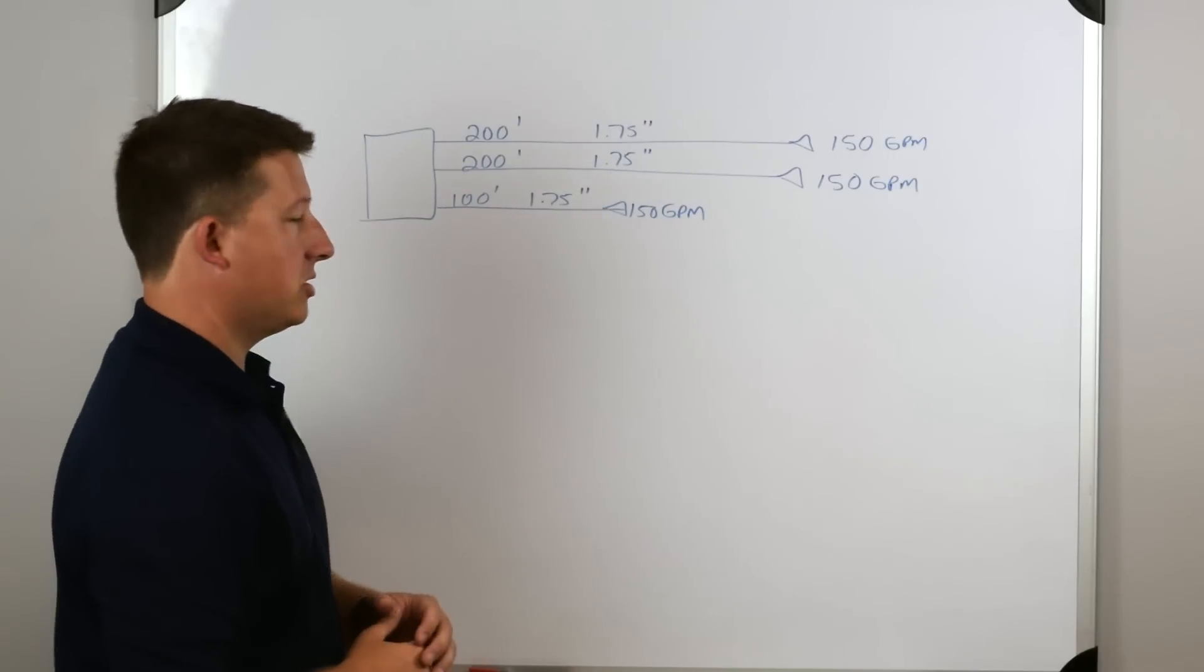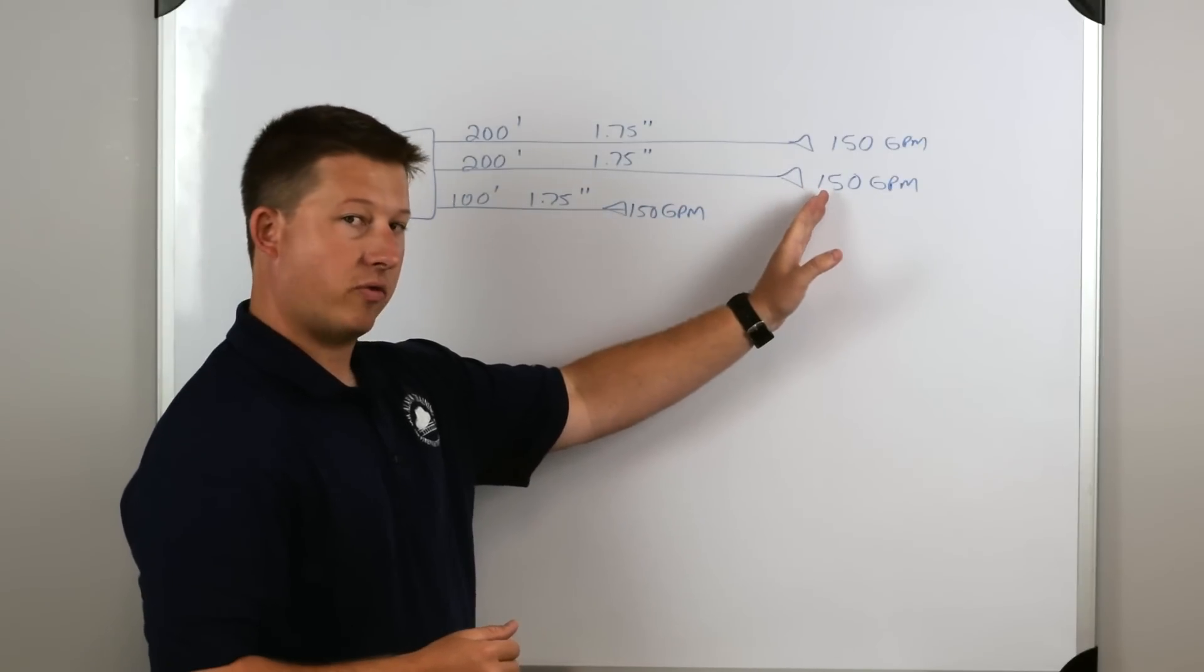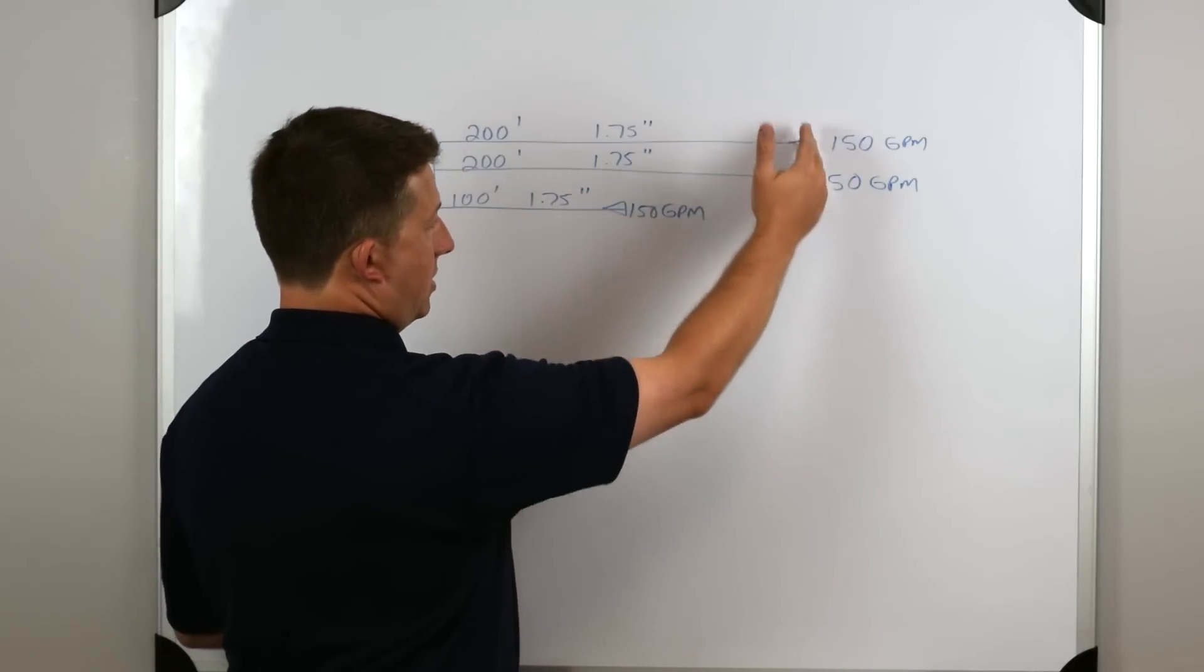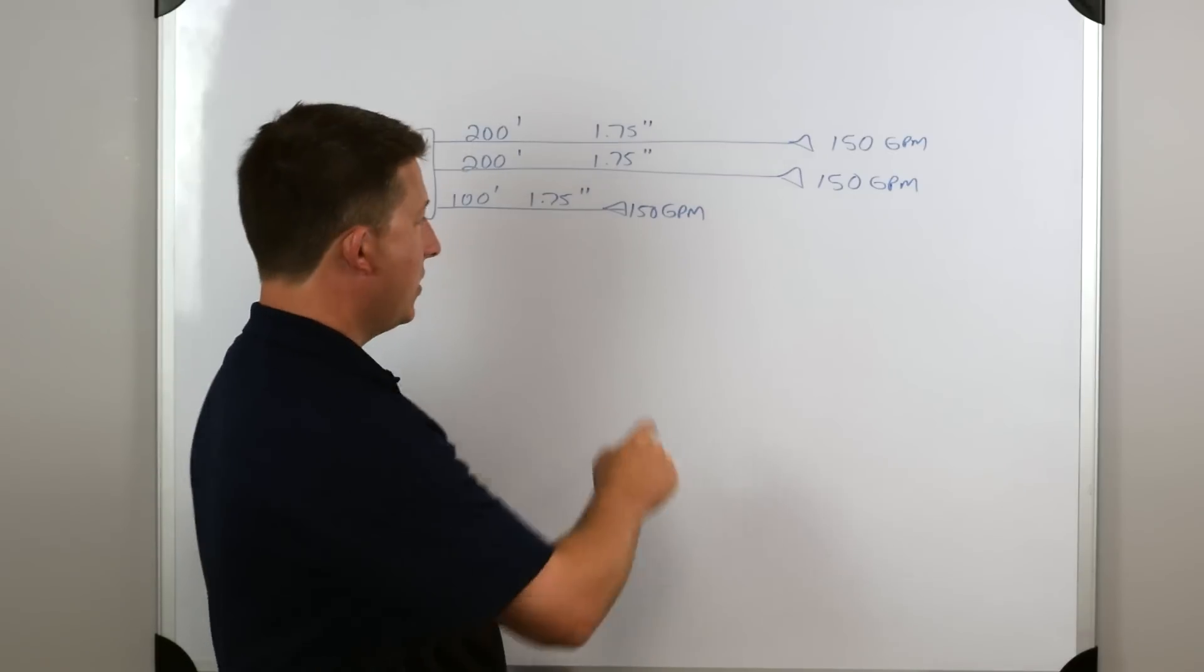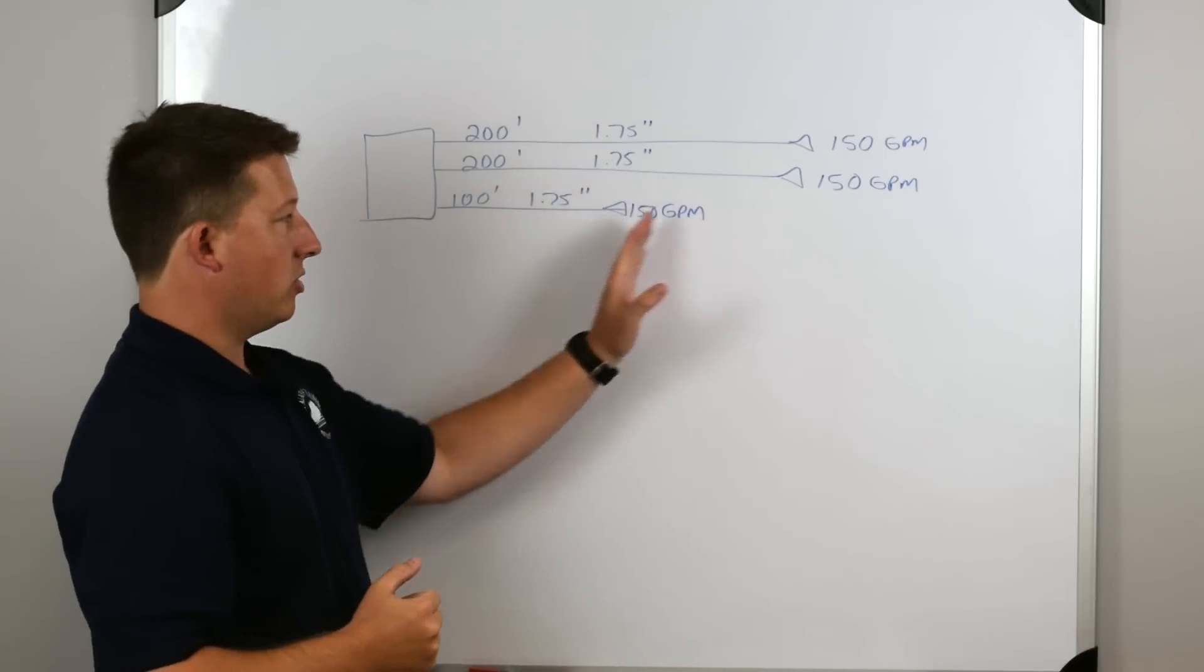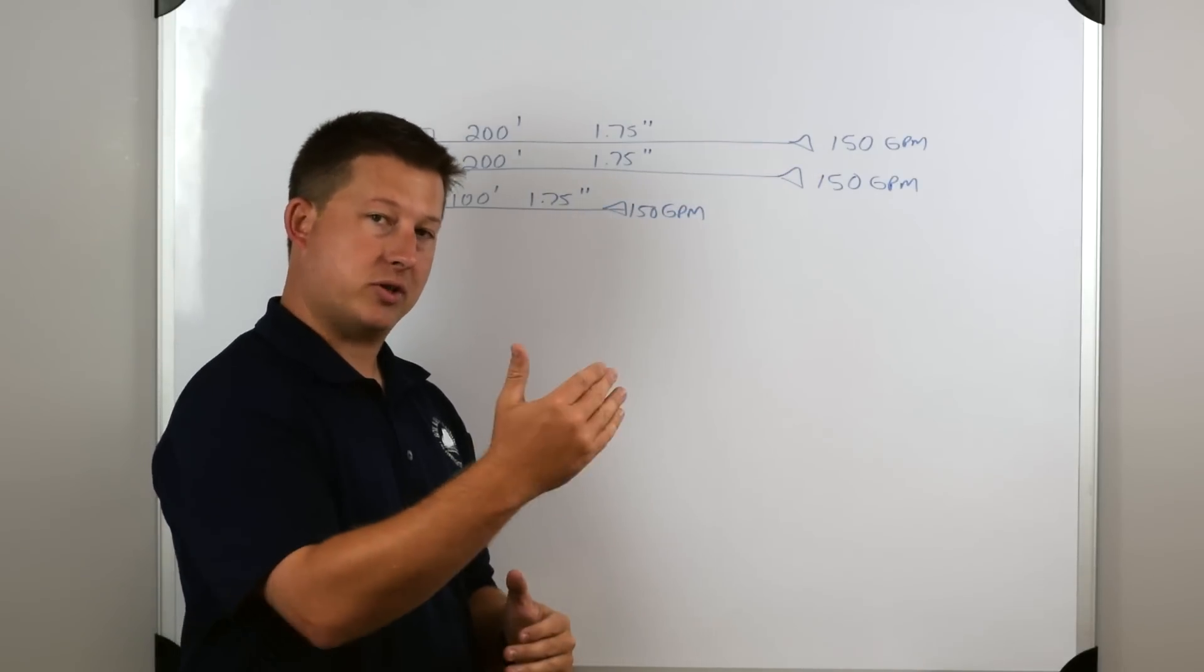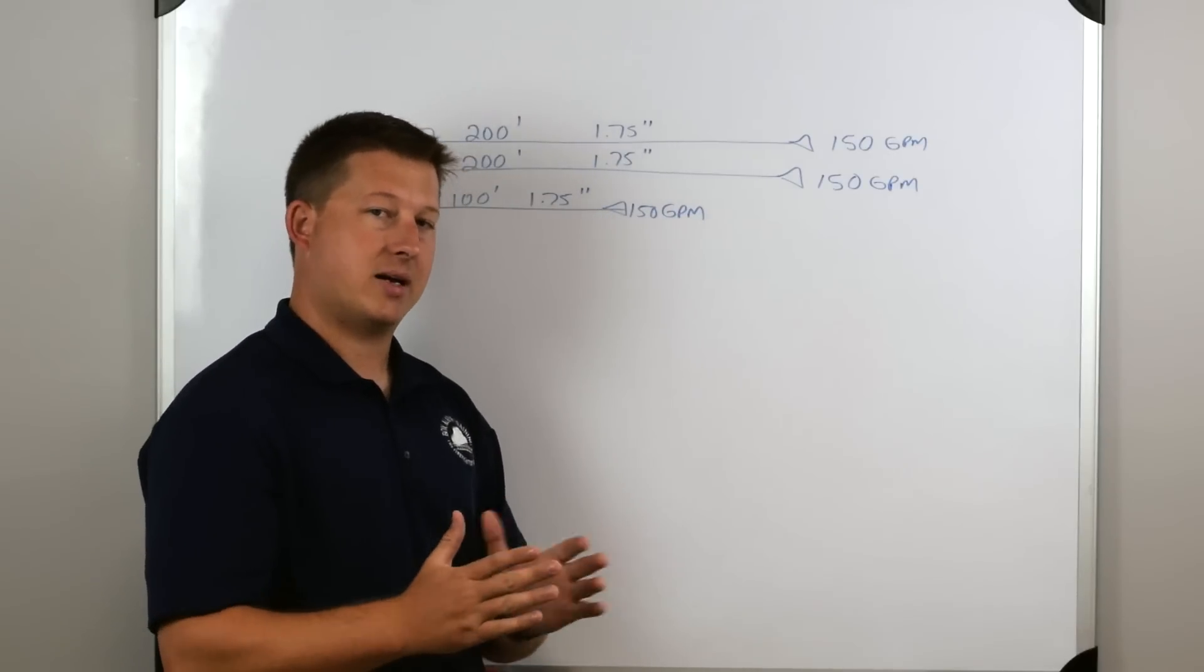Now this third line, if we open the third line, it's only 100 feet long. So we know that our friction loss is not going to be as much as the 200 foot long. It's flowing the same amount of water. So the way that we would do this on the pump is we would pump 170 psi to these nozzles, and we can see that on the individual gauges for each line. Then when we opened up this line, we would gate it back to get our pressure lower for this one line. So both of these lines will be flowing the same amount of water with more pressure, but this line is going to be flowing the same amount of water at a lower pressure because it's not as long.